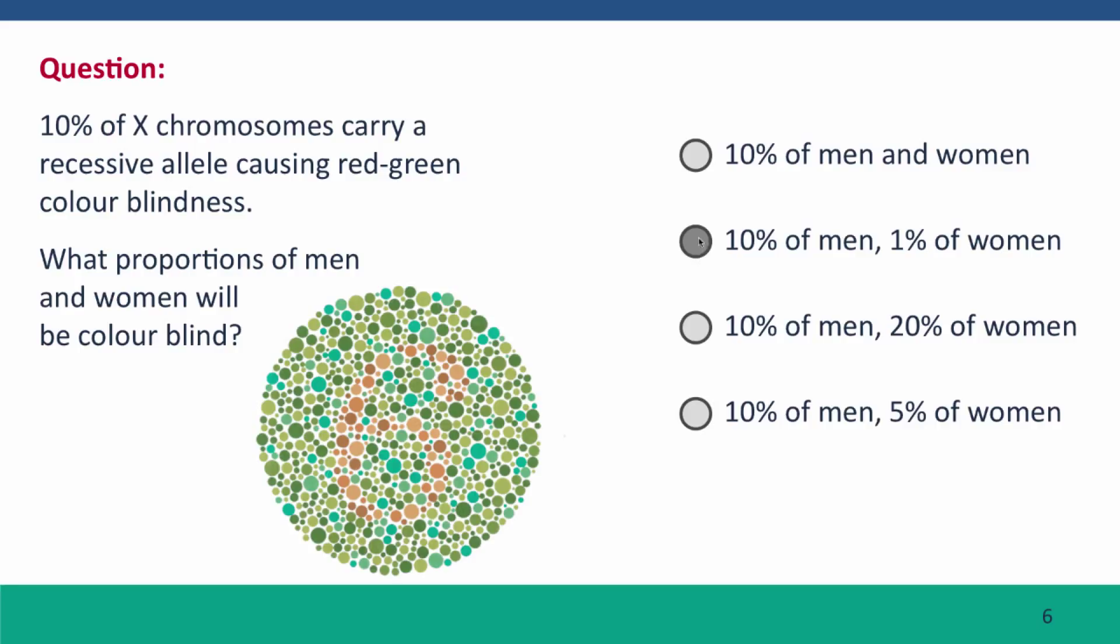And the answer is 10% of men will be colorblind, but only 1% of women will be colorblind. Why is this?